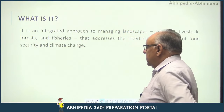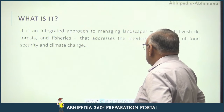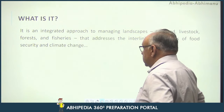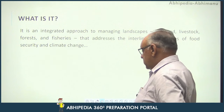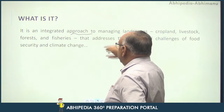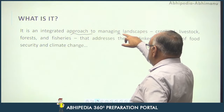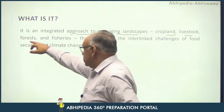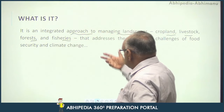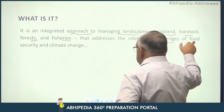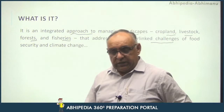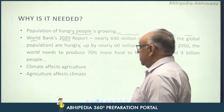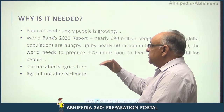As defined by the World Bank, Climate Smart Agriculture is an integrated approach to managing landscapes of cropland, livestock, forests, and fisheries that addresses the interlinked challenges of food security and climate. This is what Climate Smart Agriculture is.